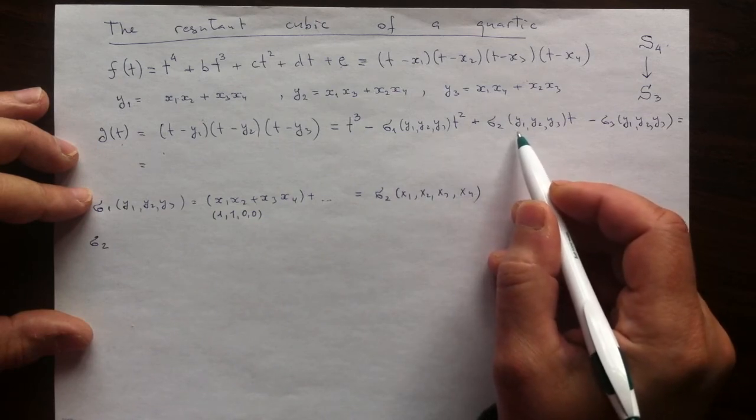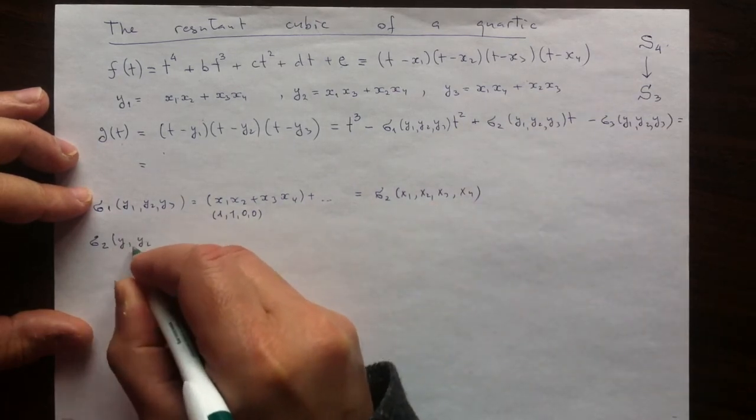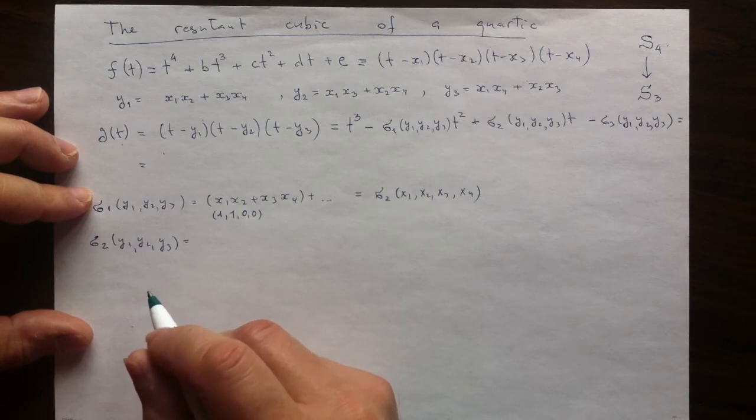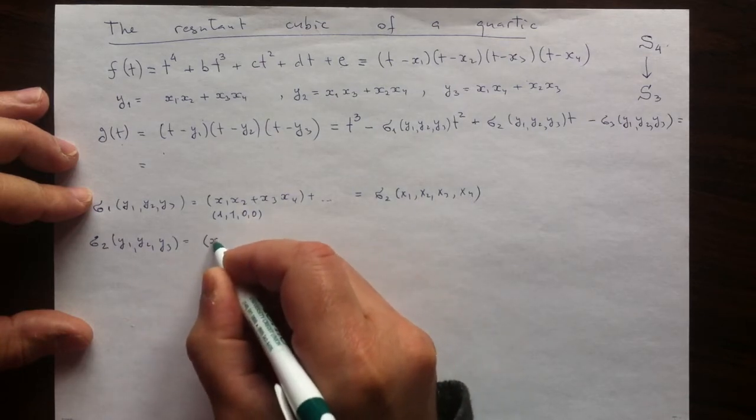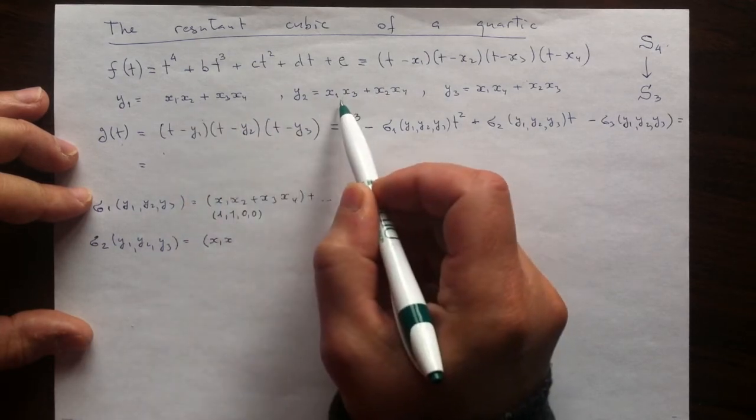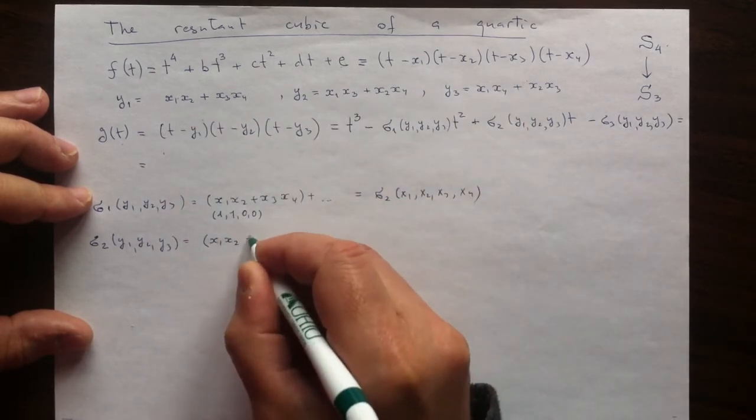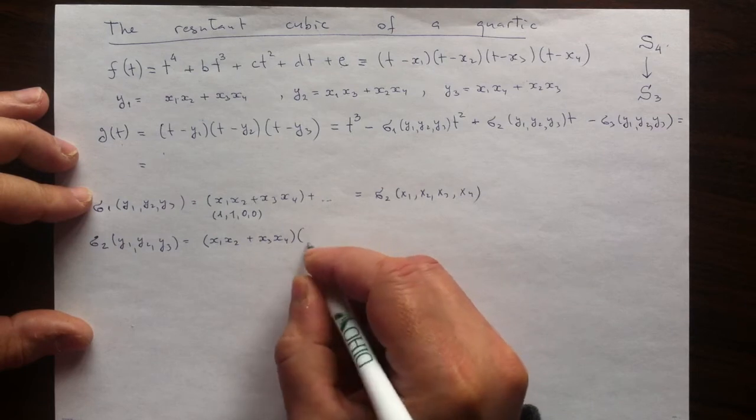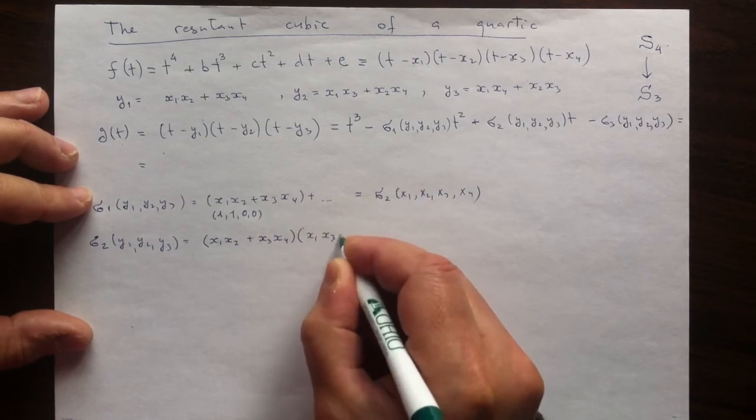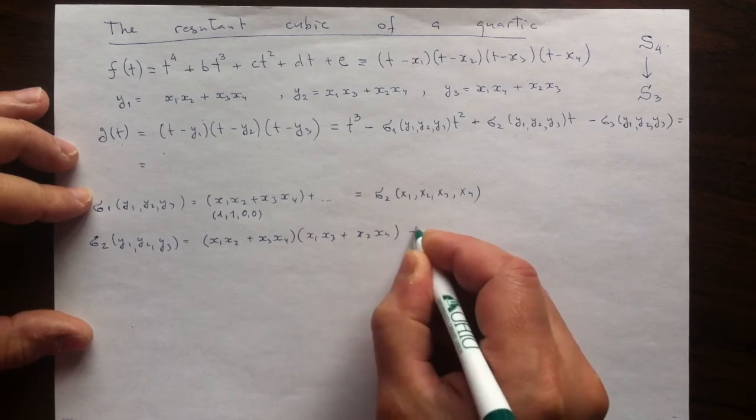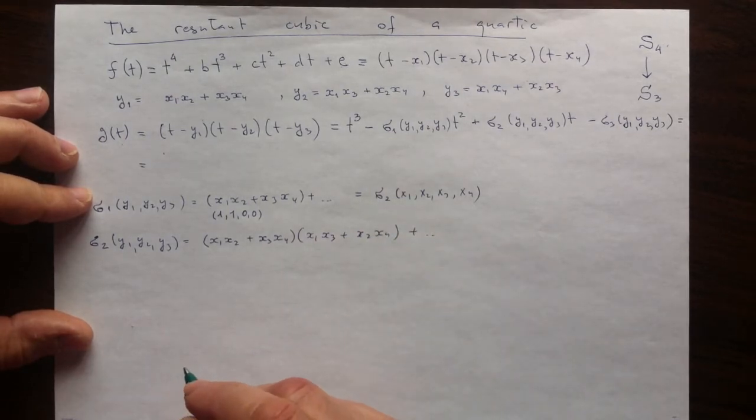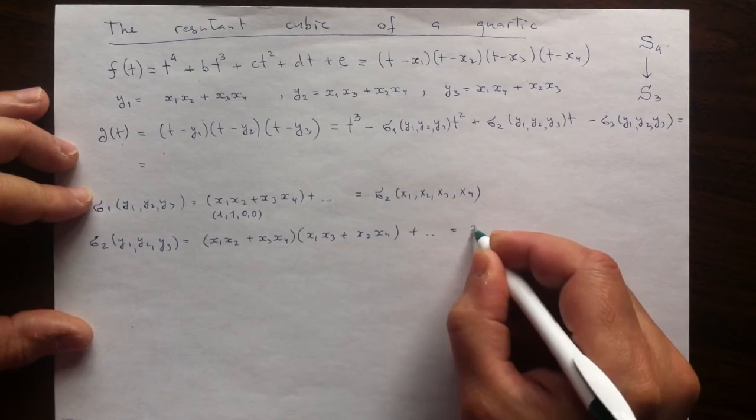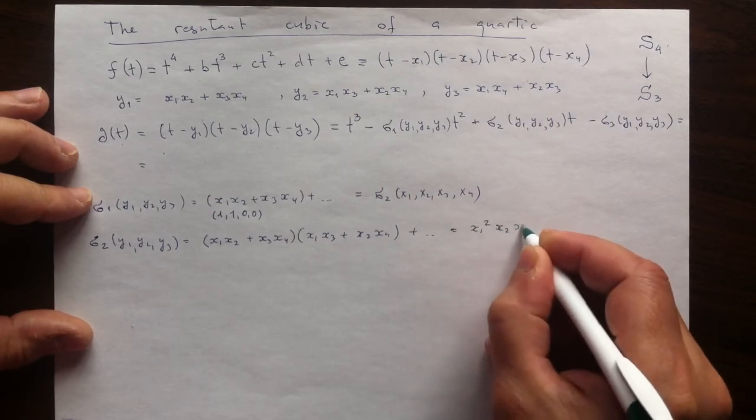σ2 of y's is the sum of all possible products. I'll have three such products, and I'll just write the highest. It's coming from taking the first two highest expressions in x's and then taking the product. Whatever comes after, two more terms, will have to be less in terms of the highest monomial.